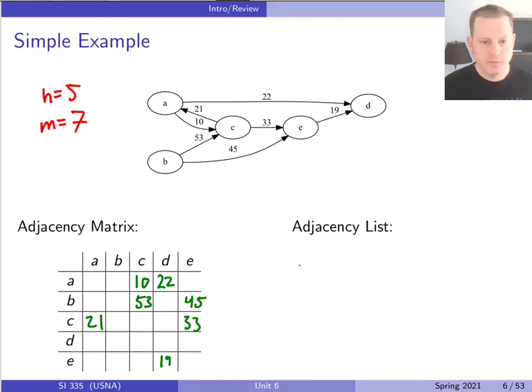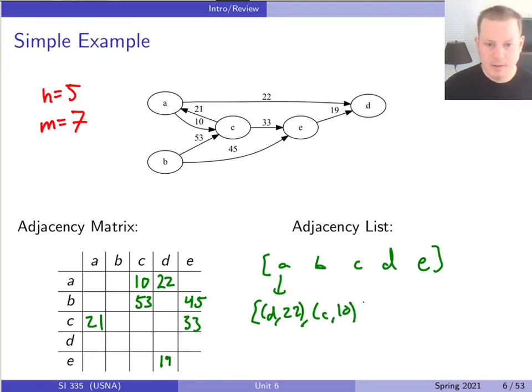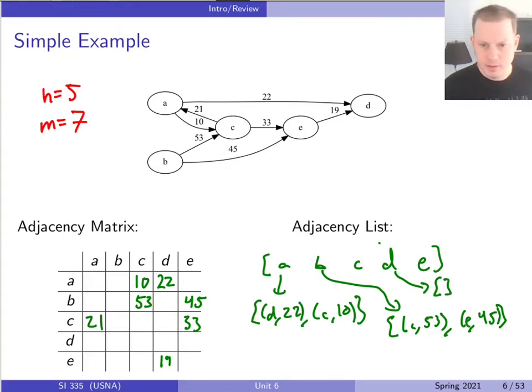But now in the adjacency matrix, so for an adjacency list, this is really all we would have. We would have a list of A, B, C, D, E, and then each one of those would be a list of all the outgoing edges from there. So A has an outgoing edge to D at length 22 and an outgoing edge to C at length 10. And then in the second entry of this adjacency list, B has an outgoing edge to C of length 53 and to E of length 45. And some of these lists will be empty. So for example, D doesn't have any outgoing edges, so that adjacency list for D would just be an empty list. So that's what the adjacency list representation looks like.